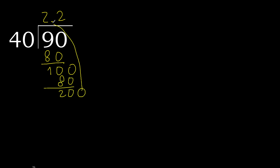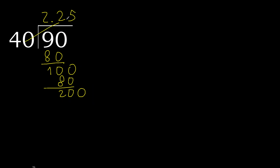Subtract — complete. 0 point. Now 200: 40 multiplied by 5 is 200 — is not greater. Subtract: 200 minus 200 is 0, therefore finish.